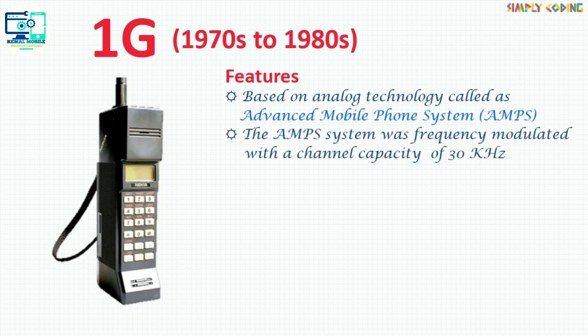The AMPS system was frequency modulated with a channel capacity of 30 kHz. Its basic features were that it had speed up to 2.4 kbps.